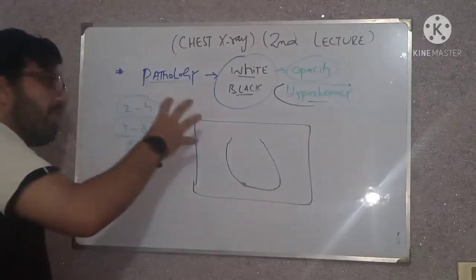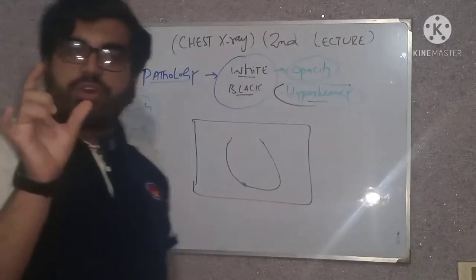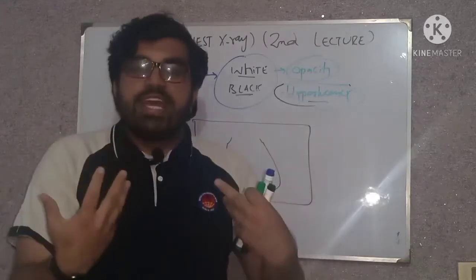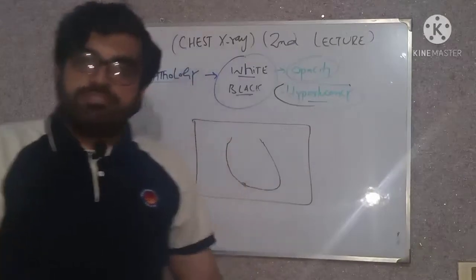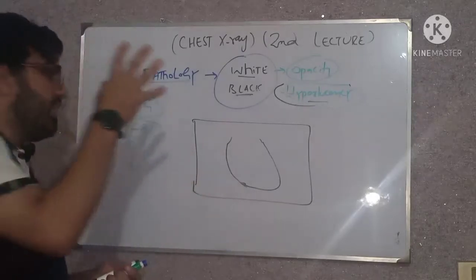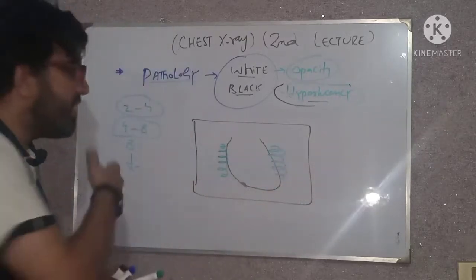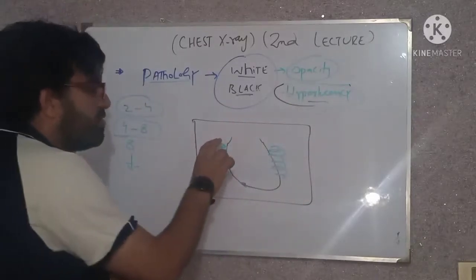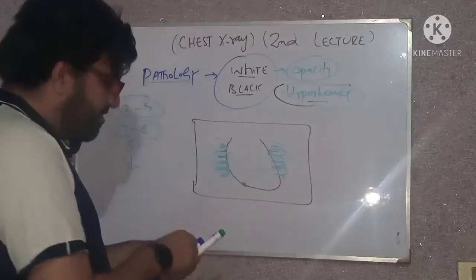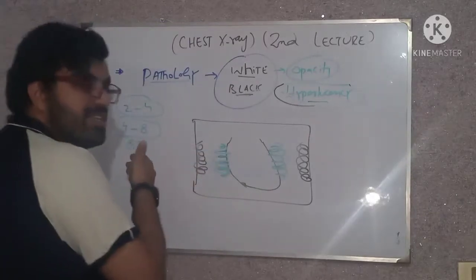Before explaining the pathology, we must know about the location. This is a very important aspect regarding chest radiology — you must know the location of the lesion, because each and every disease manifests itself in a specific pattern in a specific location. We have a central location — if it is near the heart, this is called a central lesion, also known as perihilar. And then there is peripheral — this pathology is peripheral.